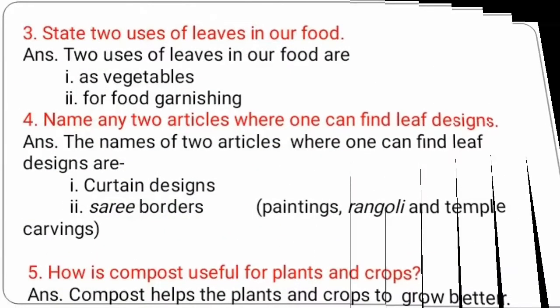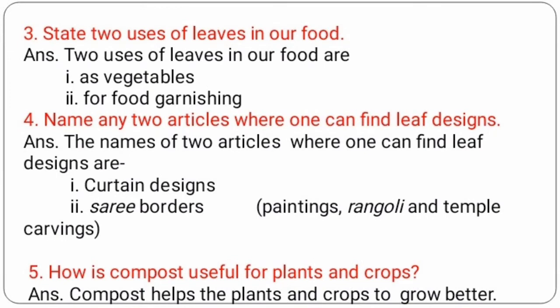So write down the answer. Question number three: state two uses of leaves in our food. Two uses of leaves in our food are: as vegetables, and second, for food garnishing. Name any two articles where one can find leaf designs. The answer: two articles where one can find leaf designs are: one, cotton sarees with designs; second, shawl borders. Also paintings, rangoli, and temple carvings.